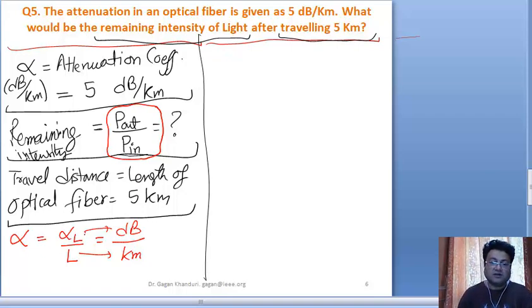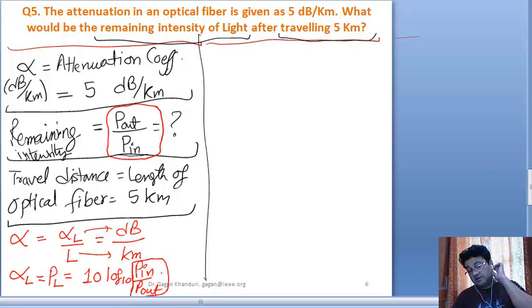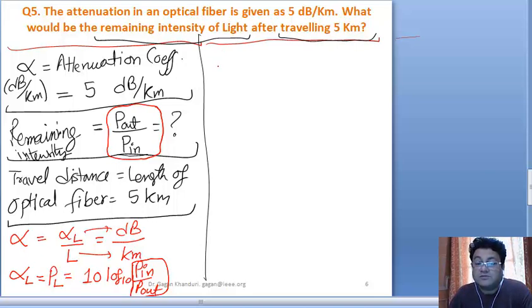The other thing is: what is the alpha L? The loss, that is the attenuation in the optical fiber or the power loss, is given as 10 log base 10 of P_in by P_out. Remember, this is P_in by P_out, not P_out by P_in, because in loss it is P_in by P_out. Let's move ahead.